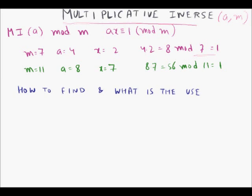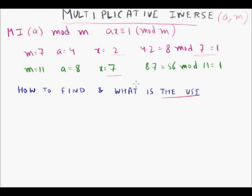Now let's see how to find these values — for example, x = 7 or x = 2 in those cases. But more importantly, why is the multiplicative inverse useful and why is it so important?